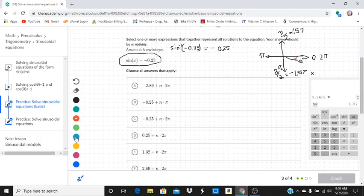So every time we go around another 2 pi, we get to the same angle. So we are going to pick the negative 0.25 plus some integer n times 2 pi. That's going to be one of our solutions. But we're choosing all the answers that apply.